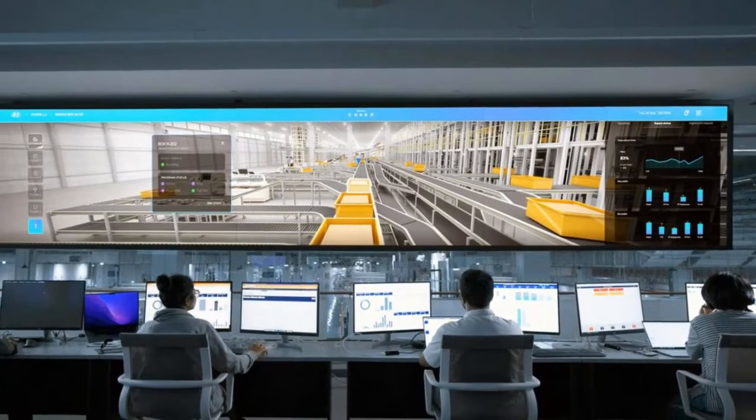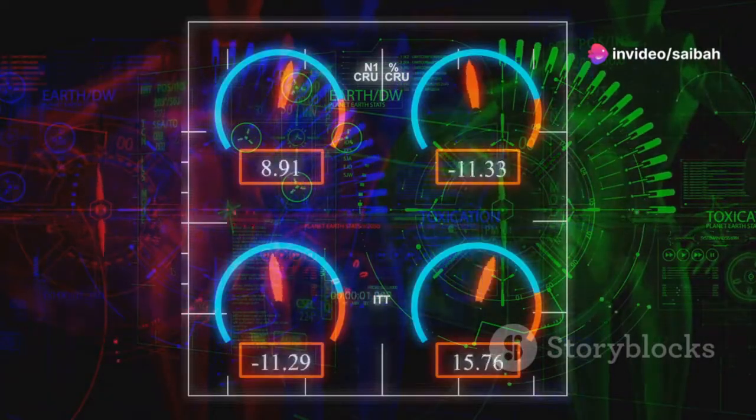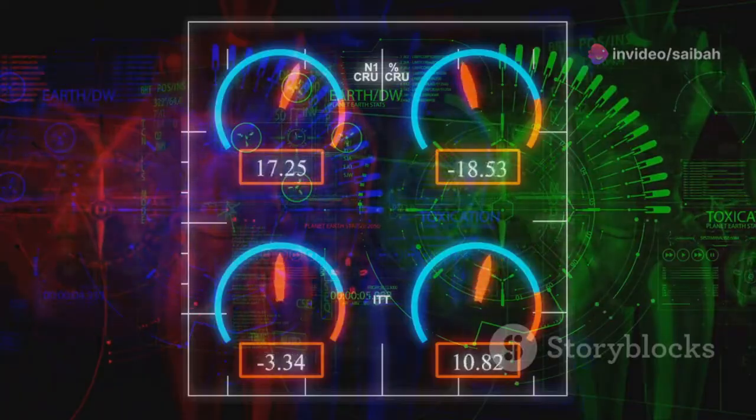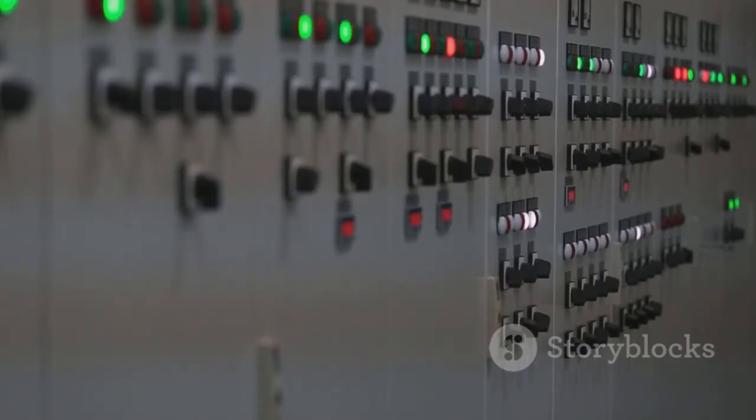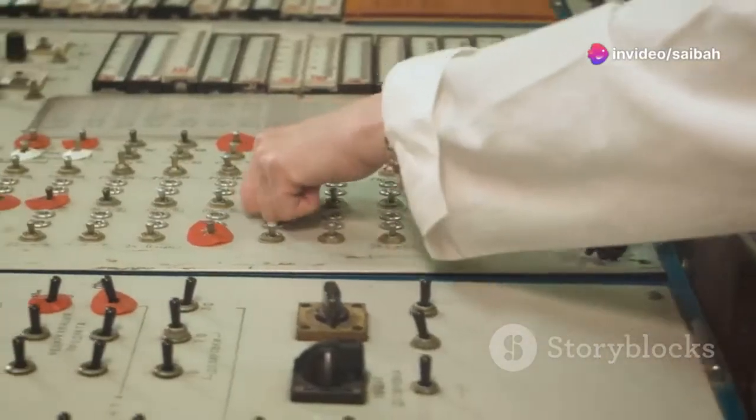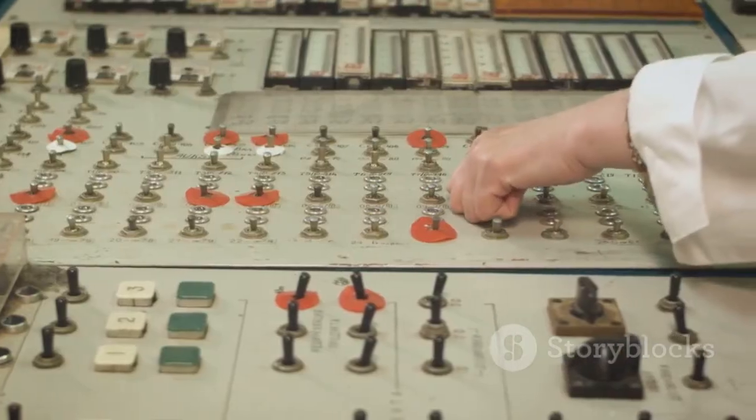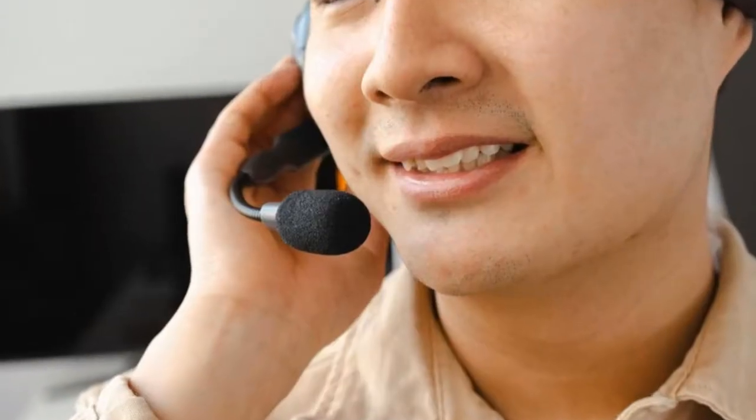The graphical nature of HMIs is one of their key advantages. Instead of deciphering raw data, operators are presented with visual representations that are easier to comprehend and interpret. For instance, a pump status can be indicated by a green icon for running or red for stopped, making it immediately clear whether the equipment is functioning correctly. This visual approach reduces the cognitive load on operators, allowing them to focus on critical tasks and make faster decisions, especially in time-sensitive situations.